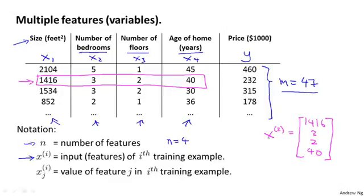So in this notation, the superscript, the superscript 2 here, that's an index into my training set. This is not x to the power of 2. Instead, this is an index that says look at the second row of this table. This refers to my second training example. With this notation, x2 is a four-dimensional vector. In fact, more generally, this is an n-dimensional feature vector.